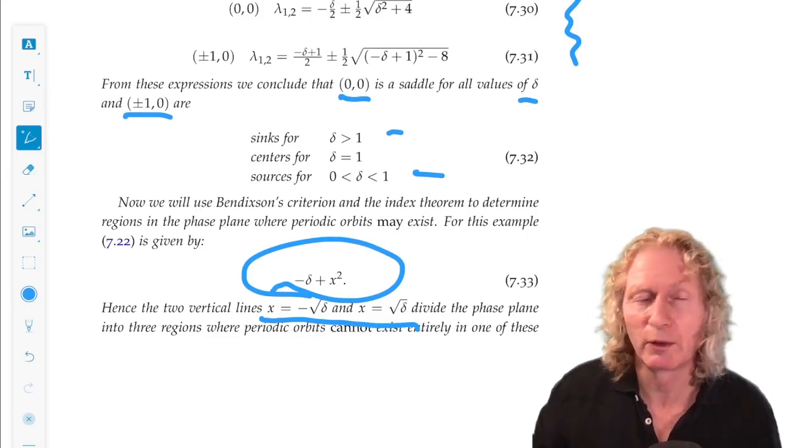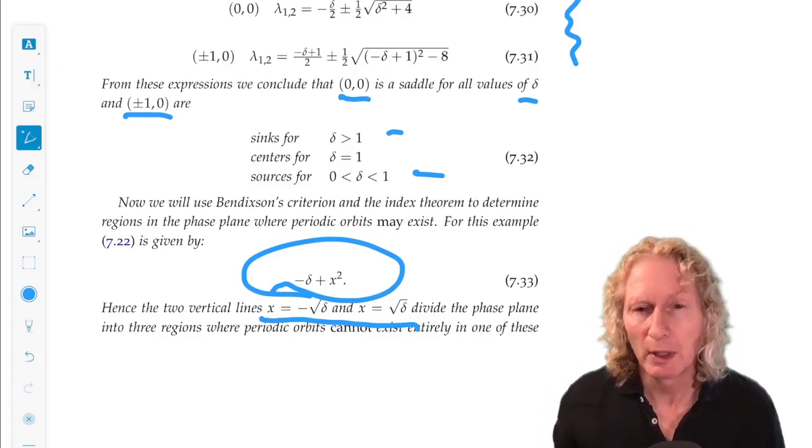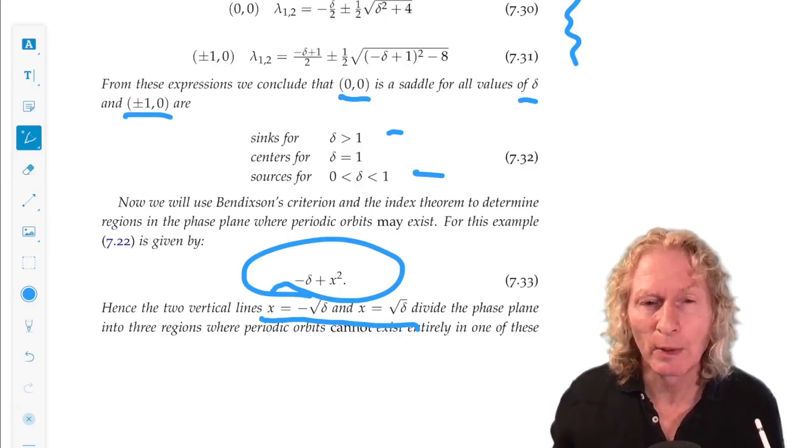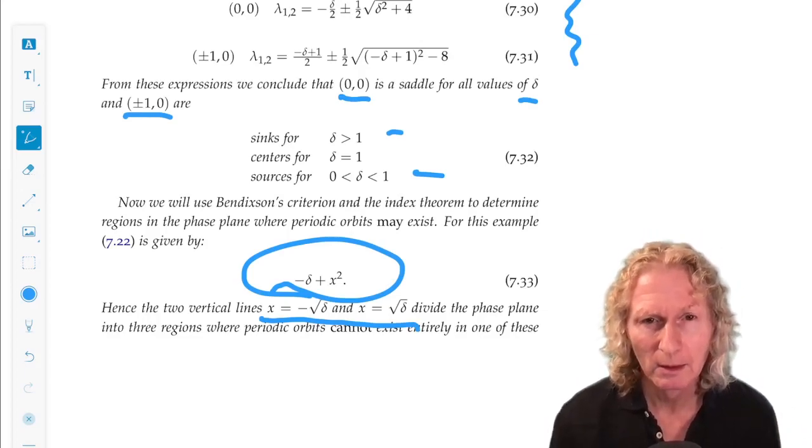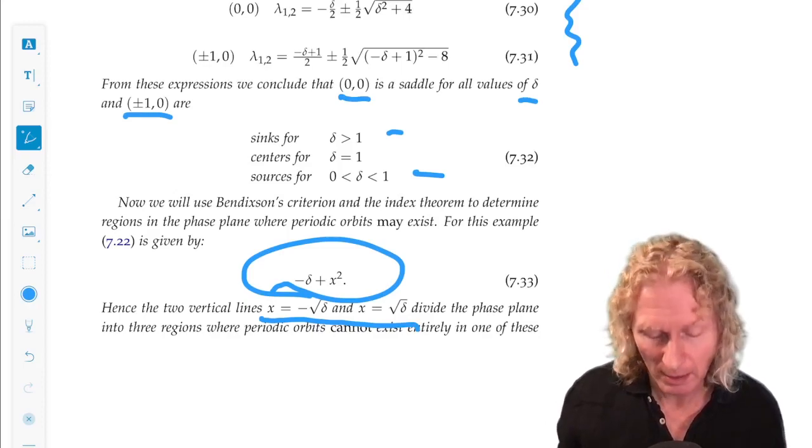So this gives us two vertical lines. And the two vertical lines divide the plane into three distinct regions. And we cannot have periodic orbits that exist entirely in one of those regions. They can overlap.